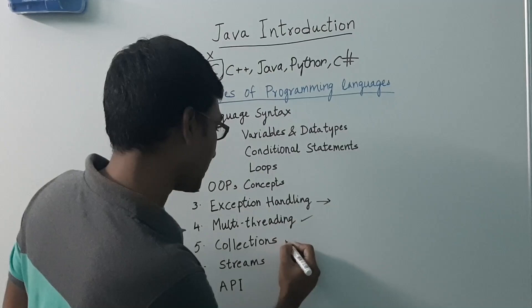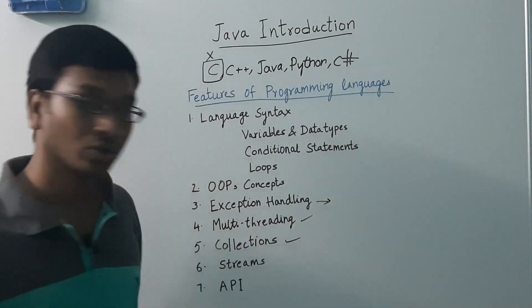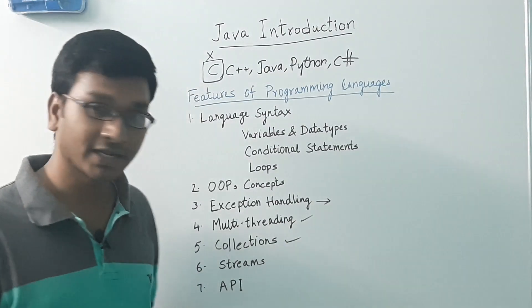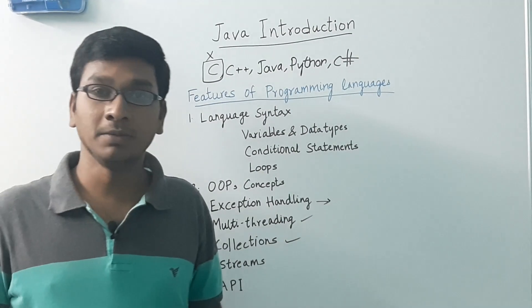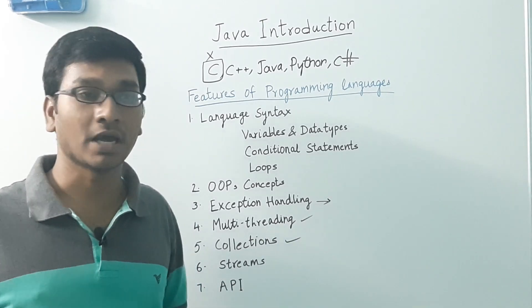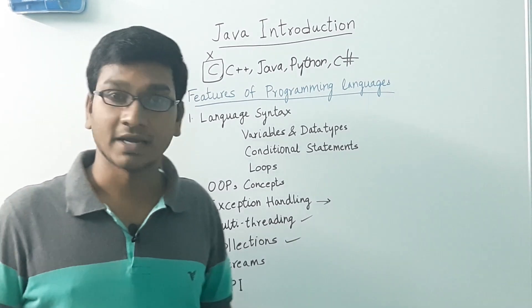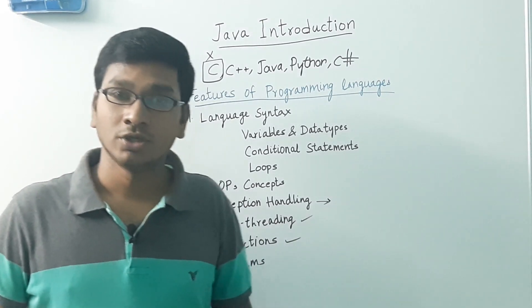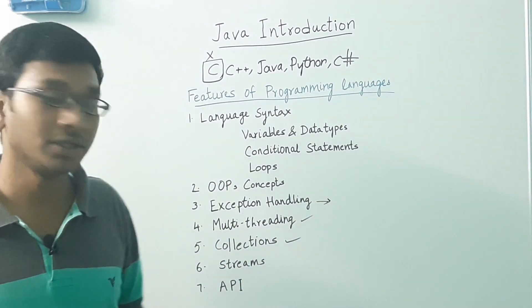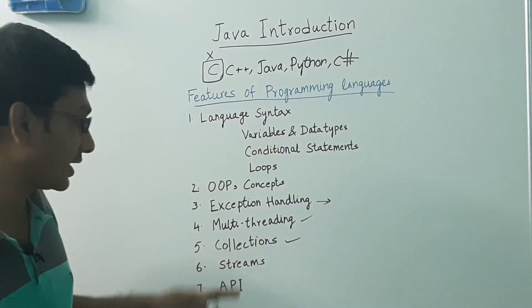Next comes collections. Collections are data structures — inbuilt data structures like arrays, array list, hash map, hash sets. All these come under collections.